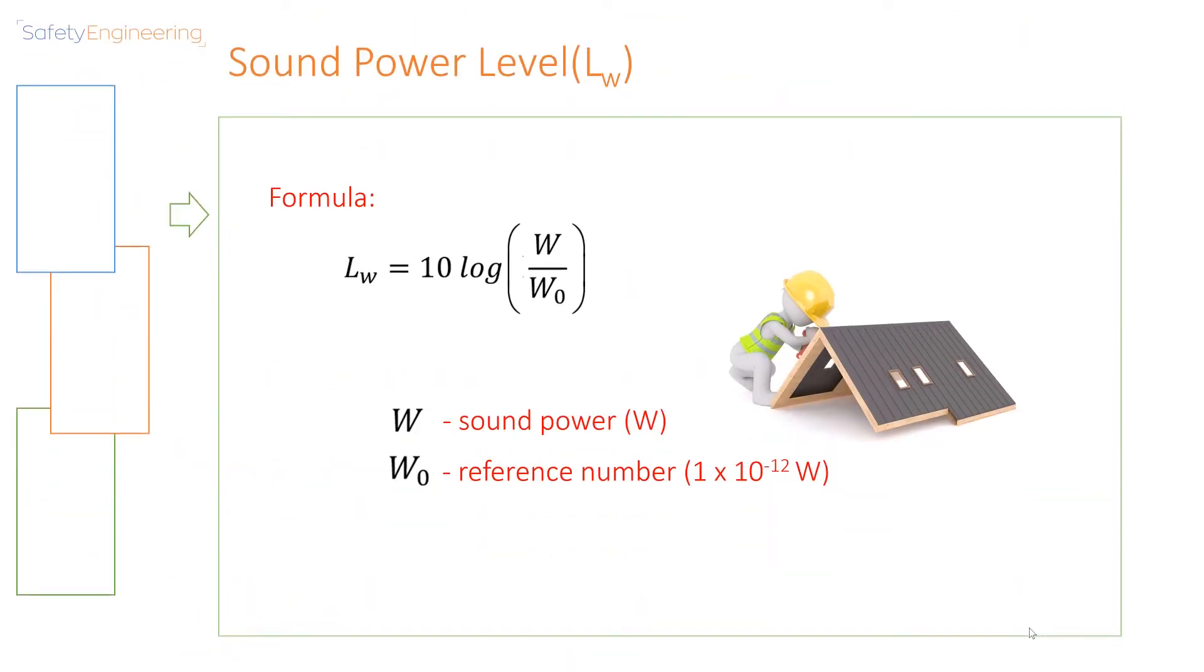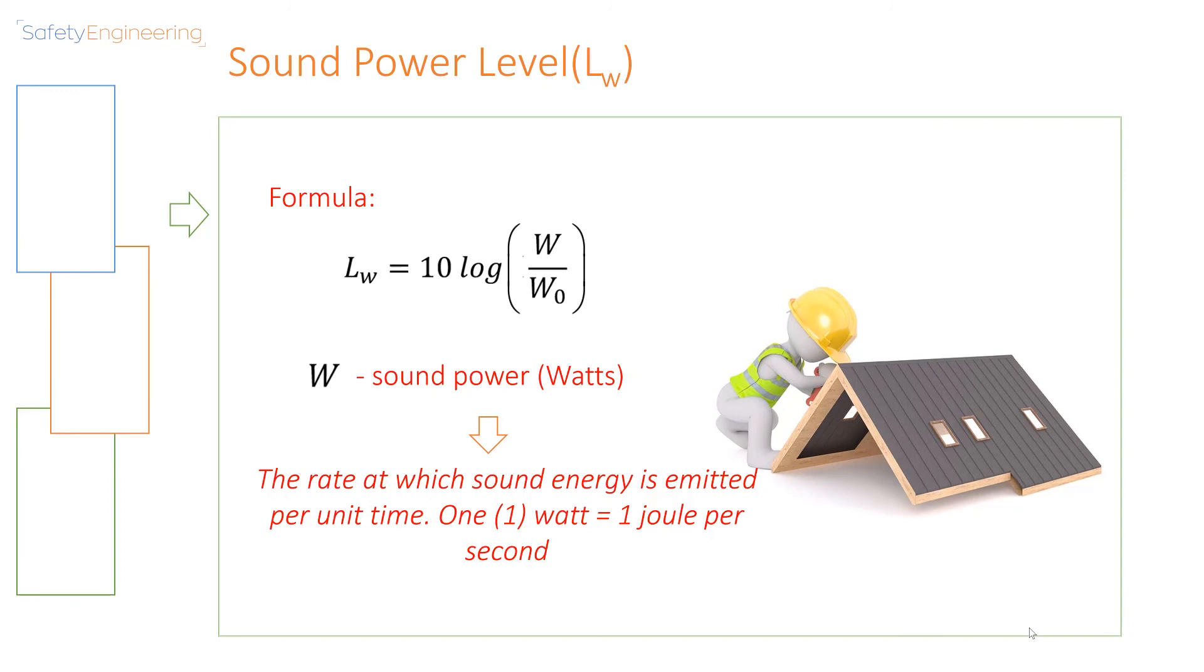This formula is the formula for sound power level. In this formula, W stands for sound power measured in watts, and W0 is a reference number which is 1 by 10 to the negative 12 watts. Sound power is the rate at which sound energy is emitted per unit time. 1 watt is equal to 1 joule per second.